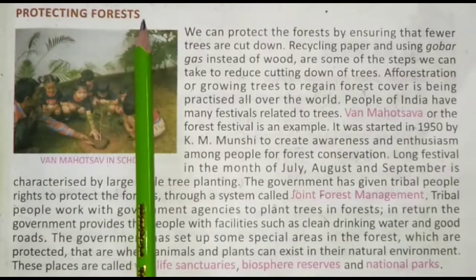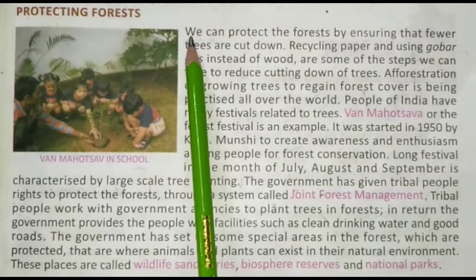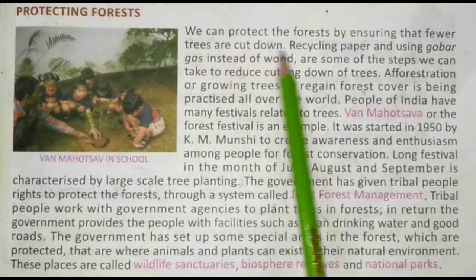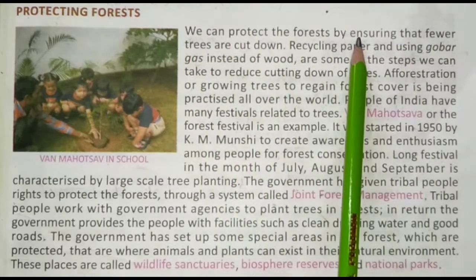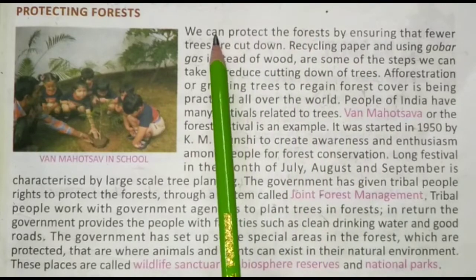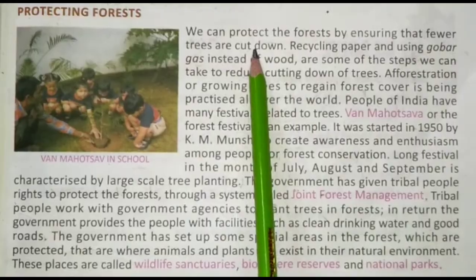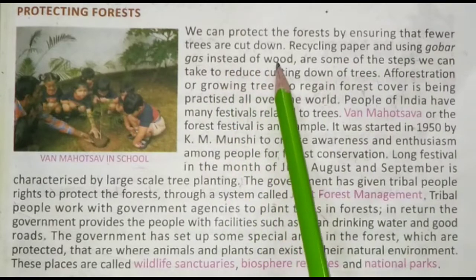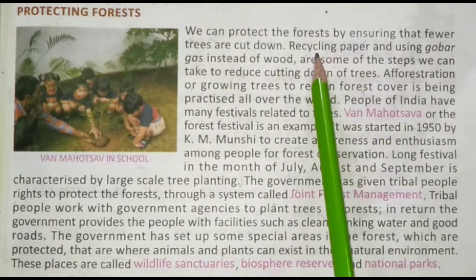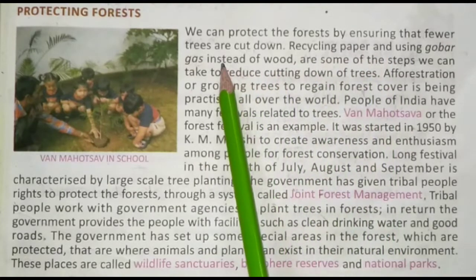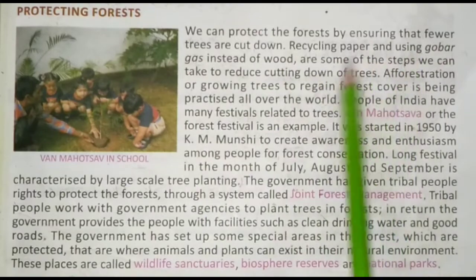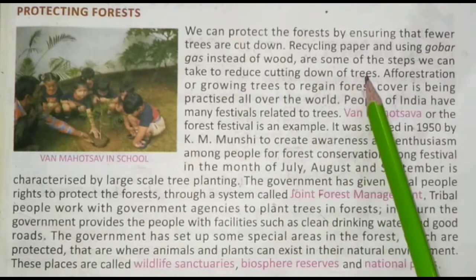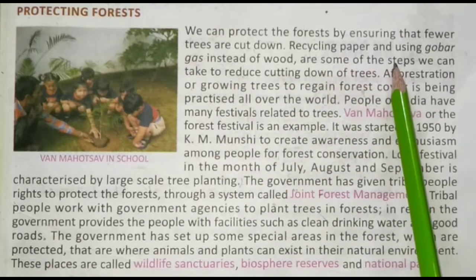Protecting Forests (Vano Ki Raksha): We can protect the forests by ensuring that fewer trees are cut down. Recycling paper and using gobar gas instead of wood (Kagaj ka punar chakran aur lakdi ke bajaye gobar gas ka upyog) are some of the steps we can take to reduce cutting down of trees.